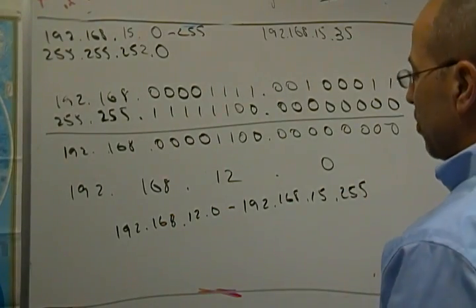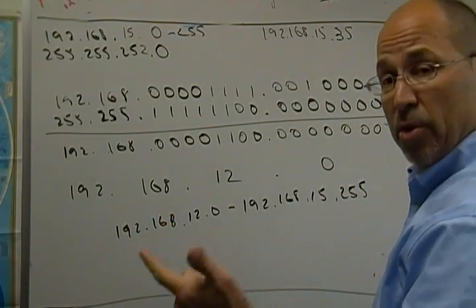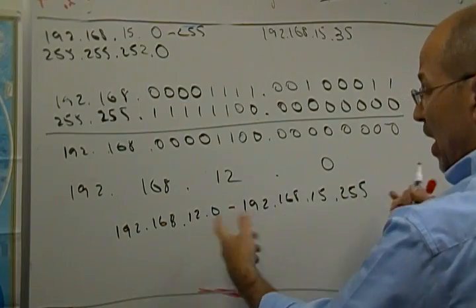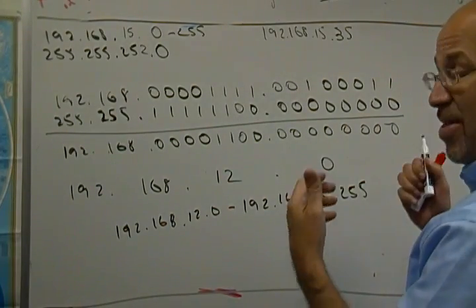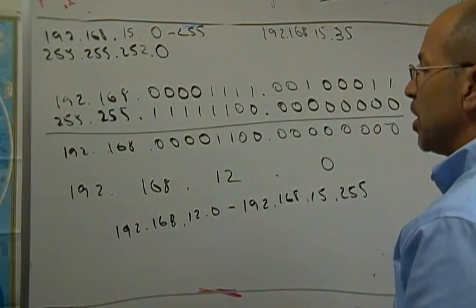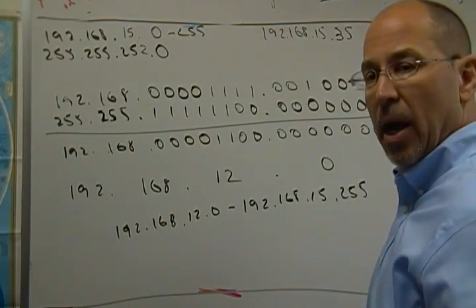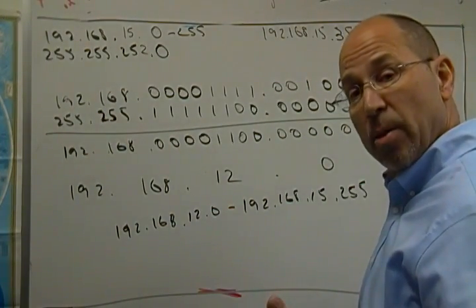Again, we've glued four networks, 12, 13, 14, 15 together. So we have a lot more hosts in the network. We now have a thousand hosts that match this particular mask. And this is really how aggregation and route summarization works.